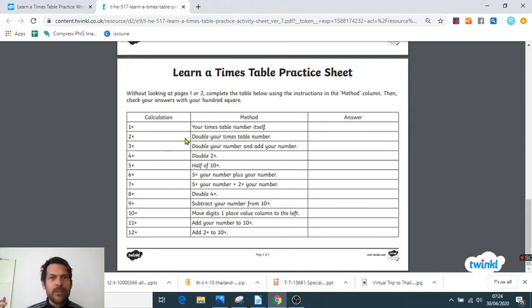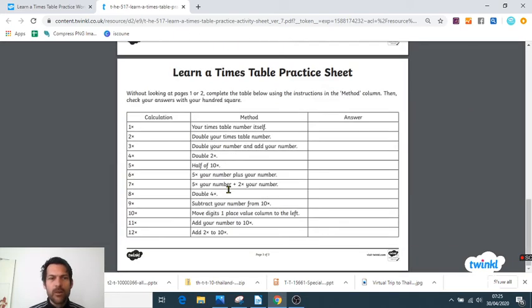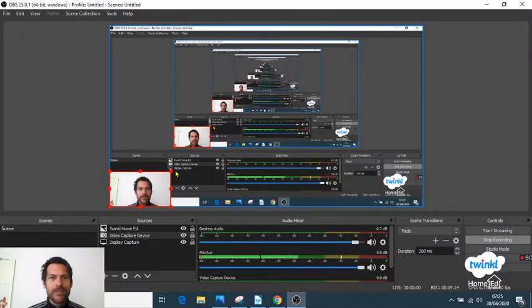You can start filling this in because obviously you know that one times seven is going to be seven, so fill that answer in there. Then you've got double your number, so you can fill that one in. And then it explains that three times would be double your number and add your number. We've got things like ten times: move the digits one place column to the left, or add a zero if you like. You've got all these different hacks that help you quickly construct your times table.